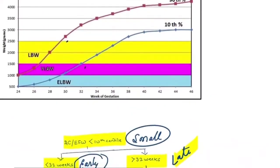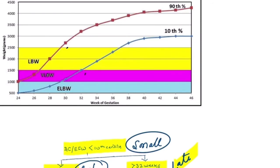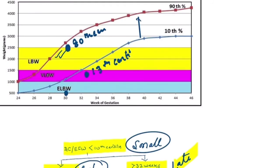Let me clarify what 'AC or EFW crossing more than 50 centiles' means. Suppose a baby was at 2500 grams at 32 weeks — plotted around the 80th centile — and at 33 weeks the fetal weight is around 1200–1300 grams, now plotting at the 13th centile. The difference is 80 minus 13, which is more than 50 centiles. This drop in centile ranking indicates significant growth restriction, so we call it IUGR.